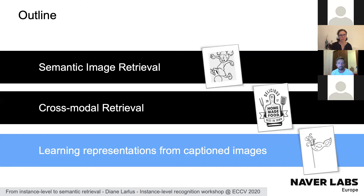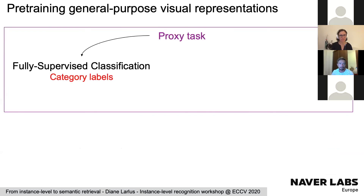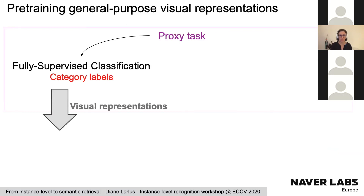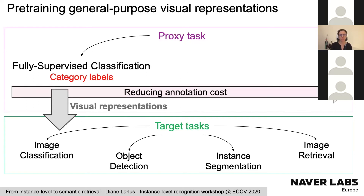I want to add a short third part, slightly disconnected from retrieval, showing what you can do with image-caption pairs. You can pre-train general-purpose visual representations using fully supervised classification with category labels — as people do with ImageNet — producing representations useful for classification, object detection, instance segmentation, or image retrieval. Recently, there's a trend toward reducing annotation cost through self-supervised learning on large collections of unlabeled images.